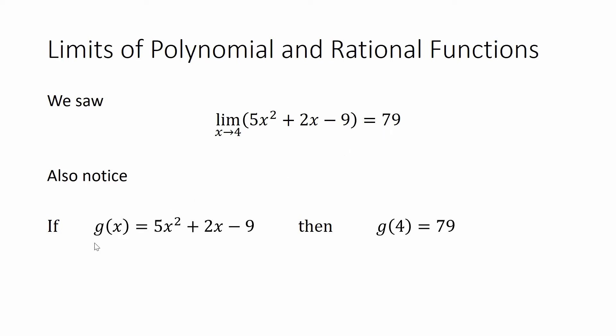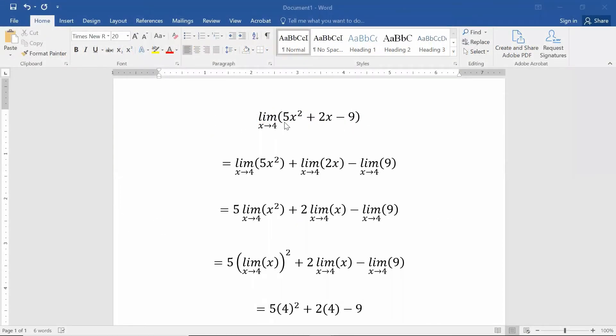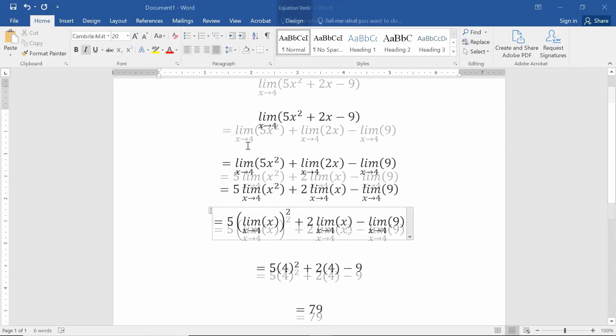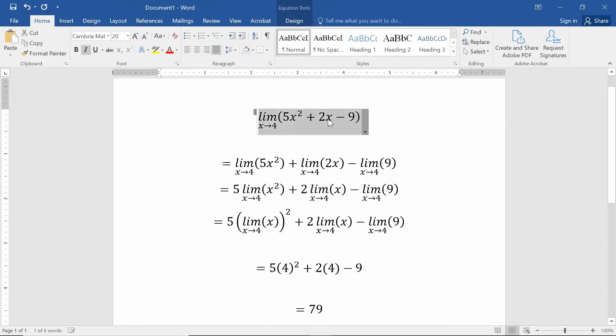And if I call g of x that 5x squared plus 2x minus 9, it turns out if you would have plugged in 4, you would have gotten 79. In fact, as you saw this, 5x squared plus 2x minus 9, essentially when we use those limit properties, we got down to 5 times 4 squared plus 2 times 4 minus 9. So we see that this led to the same thing as me just plugging in 4 into this function or into this algebraic expression.